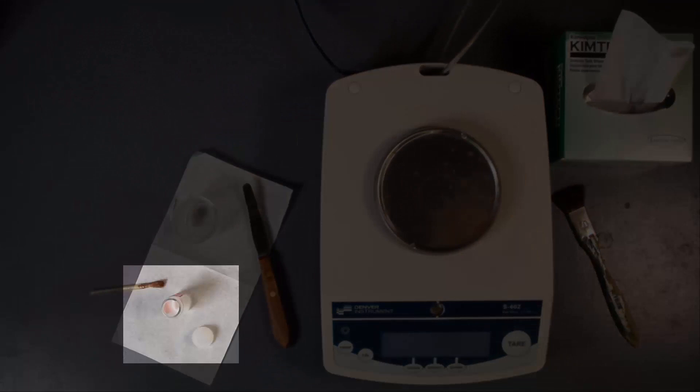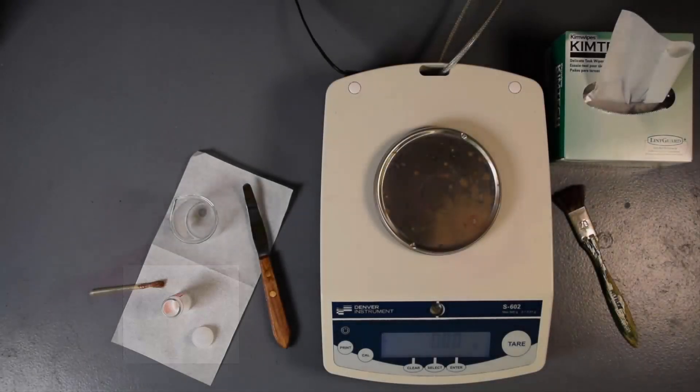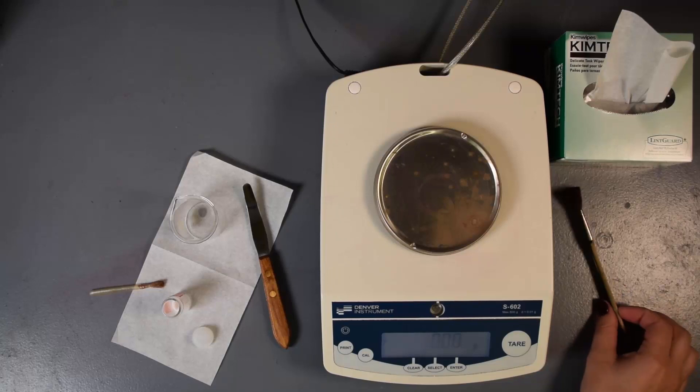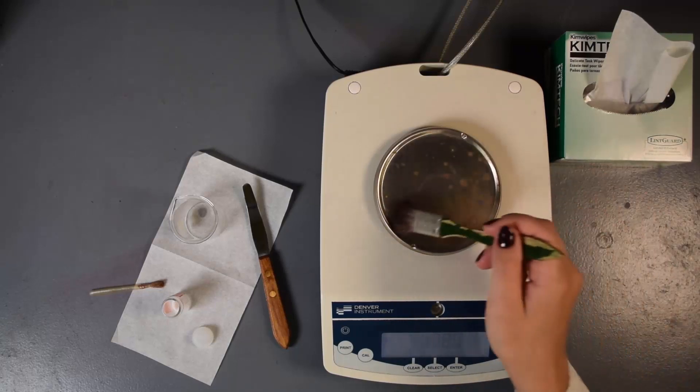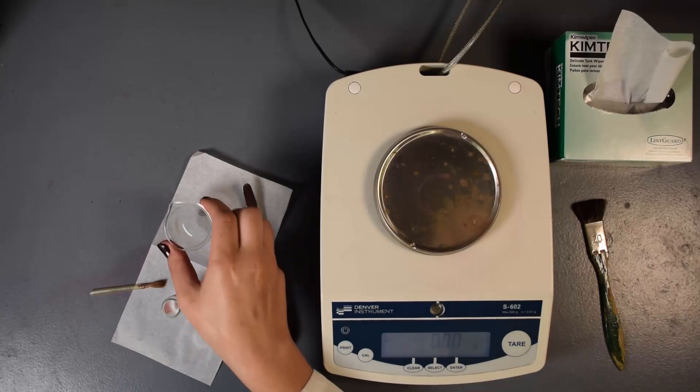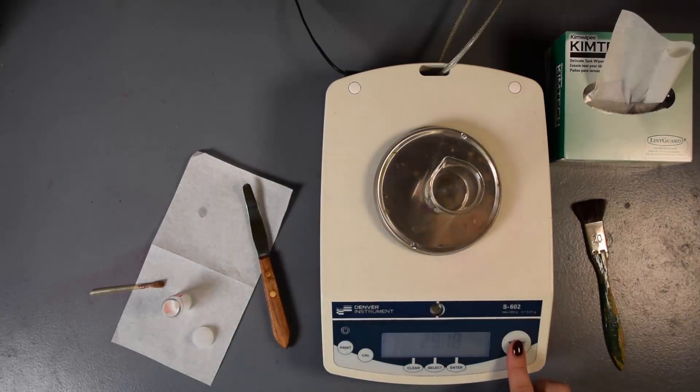It is a good idea to place the container on a kim wipe if the bench top is dirty. If the compound is hygroscopic, the container should be capped as much of the time as possible. Gently clean the balance with a brush. Place the empty beaker on the top loading balance and tare the balance.